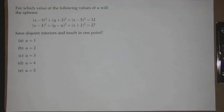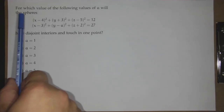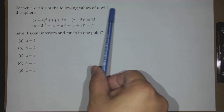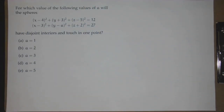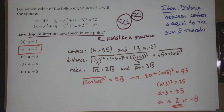What's the question? For which of the following values of A will the spheres — and there are two spheres — have disjoint interiors and touch in one point? Does anybody have the answer? Someone said A equals 2. Why does this work? Disjoint interiors means we don't want them to overlap on the inside, so there's not a sphere inside the other, but they have to touch. So we're trying to build a snowman.